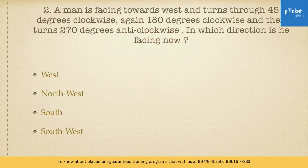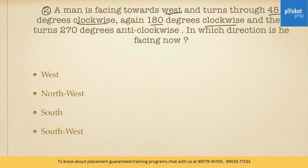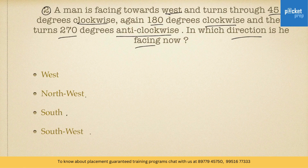Now the second question: A man is facing towards west and turns 45 degrees clockwise, and again 180 degrees clockwise, and then turns 270 degrees anticlockwise. In which direction is he facing now? The options are: West, North-West, South, South-West.